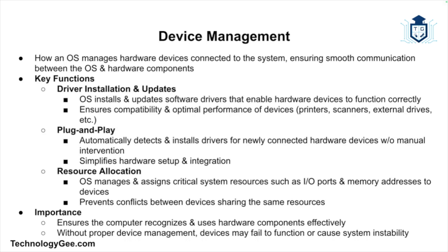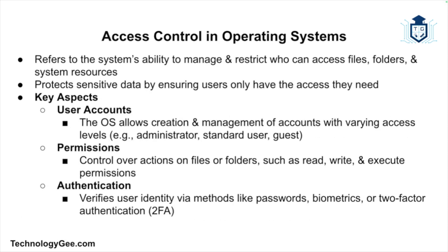Next let's discuss device management. This refers to how the operating system manages hardware devices connected to the system, such as printers, scanners, external drives, and network cards. The operating system uses drivers — software components that allow it to communicate with hardware devices. Device management includes driver installation and updates, plug and play (where the OS detects a new device and installs necessary drivers automatically), and resource allocation — assigning resources like I/O ports and memory addresses to connected devices to prevent conflicts.